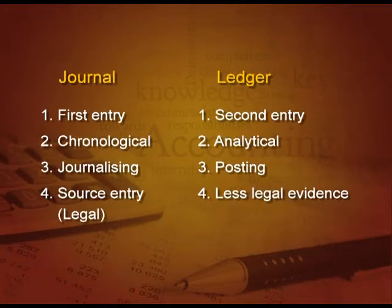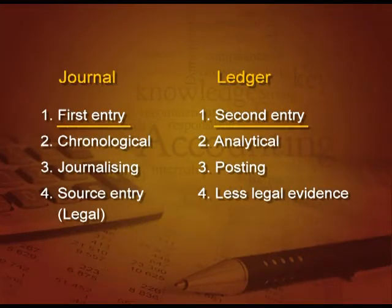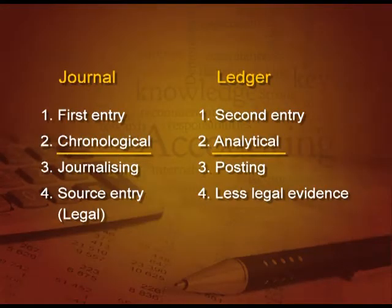Now let us understand the difference between journal and ledger. In journal, we record the entry for the first time, and after that we record it in the ledger. So we can say in ledger it is the second entry, in journal it is the first entry. In journal we record in chronological order, that is date-wise order, but in case of ledger we record in analytical manner. Analytical means all entries relating to a particular person or group are recorded at one place.